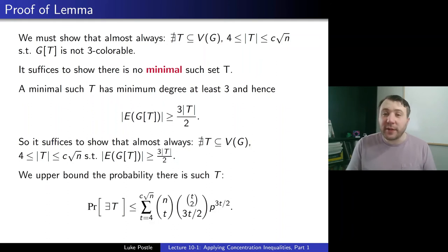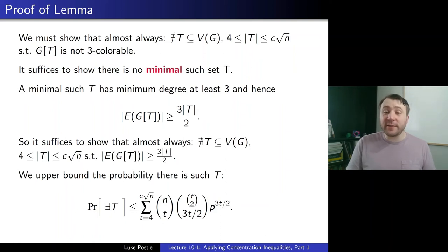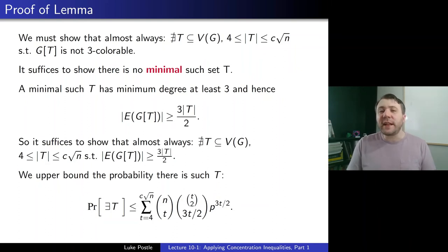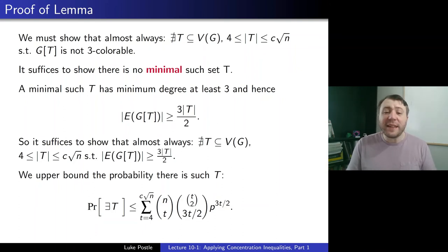So minimal such T has minimum degree ≥ 3, hence the number of edges in the induced subgraph is at least 3|T|/2 by handshaking. It suffices to show almost always there is no T with 4 ≤ |T| ≤ c²√n such that the number of edges in G[T] is at least 3|T|/2. We upper-bound this probability by summing over all t from 4 to c²√n: we choose t vertices (n choose t ways), then choose which 3t/2 edges to include, times p^{3t/2}.